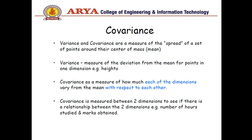Let's move to variance. Variance is the measure of variation from the mean for points in one dimension, for example height. Covariance is a measure of how much each of the dimensions vary from the mean with respect to each other. Mean is the summation of total numbers divided by total numbers. Covariance is measured between two dimensions to see if there is a relationship between the two dimensions, for example number of hours studied and marks obtained.